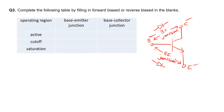So what does it mean for the base-emitter as well as the base-collector junction if the operating region is the active region? In the active region, the base-emitter junction has to be forward biased, while the base-collector junction is reverse biased.